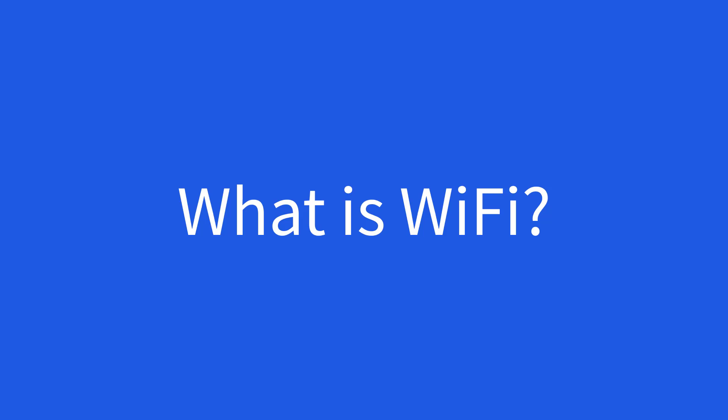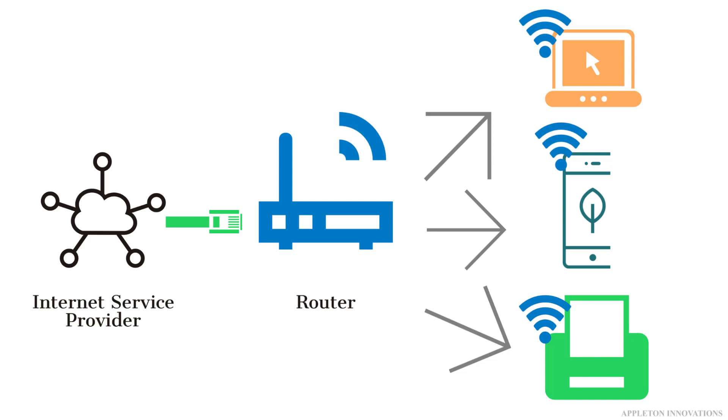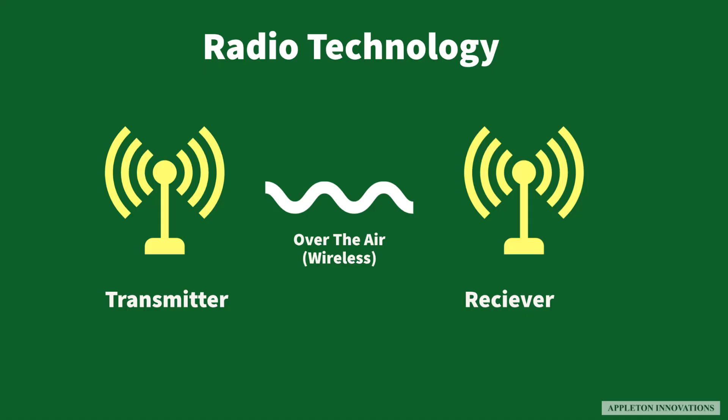Wi-Fi is an alternative network to a wired network, commonly used for connecting devices in wireless mode. Wi-Fi — which stands for Wireless Fidelity — is a generic term referring to the IEEE 802.11 standard for wireless local area networks, or WLANs. Wi-Fi connects computers to each other, to the internet, and to the wired network.